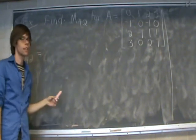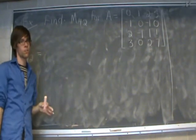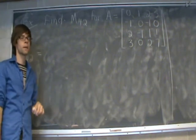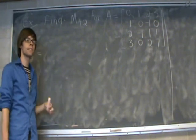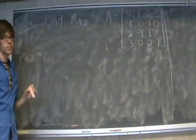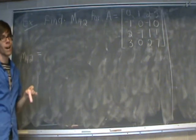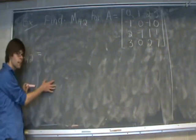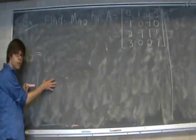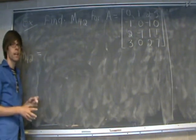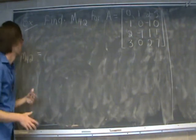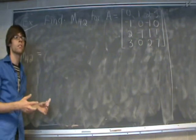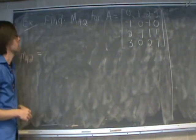Next, let's take a look at how to handle a 4x4 matrix — these will be the largest matrices you're likely to see in the course. If you have to calculate a minor for a 4x4 matrix, you'll end up with a 3x3 determinant to calculate, and the easiest way to do that is using the weave method from the last video.